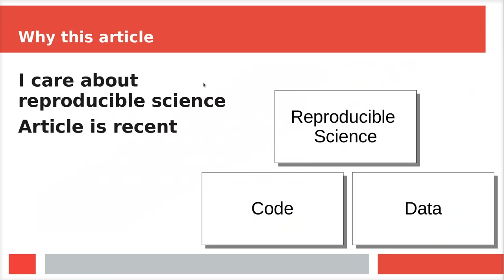That's why I picked this article. It's about reproducible science, and I care about that. The article is also very recent. When I think about reproducible science — and I made this slide before the others — I think about code and data. There's a third thing, however, that I completely forgot, which is just as important. It's not mentioned in the paper, and I'll clarify what I think is the missing third part of reproducible science.